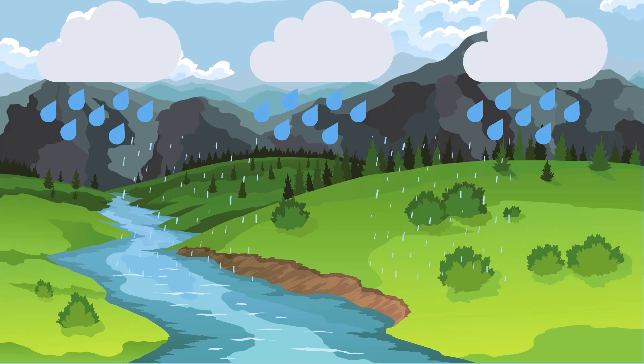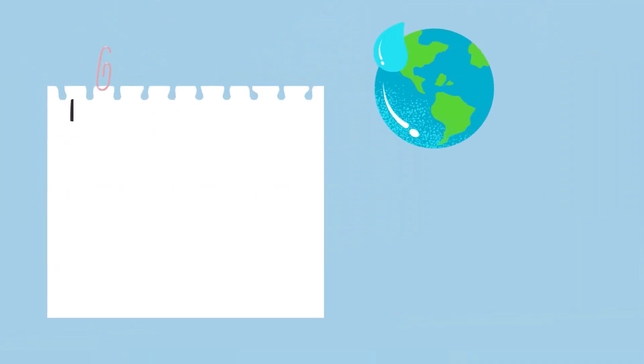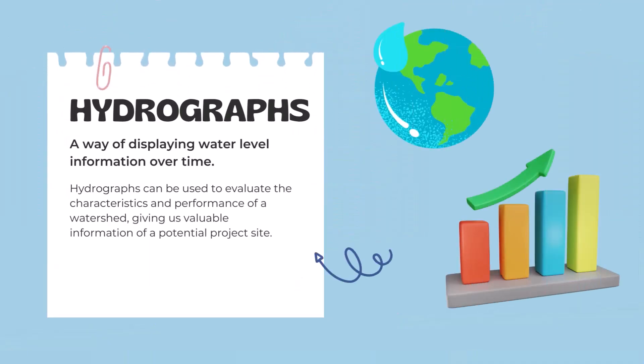A hydrograph is a way of displaying water level information over time. Hydrographs can be used to evaluate the characteristics and performance of a watershed, providing valuable information for a potential project site.